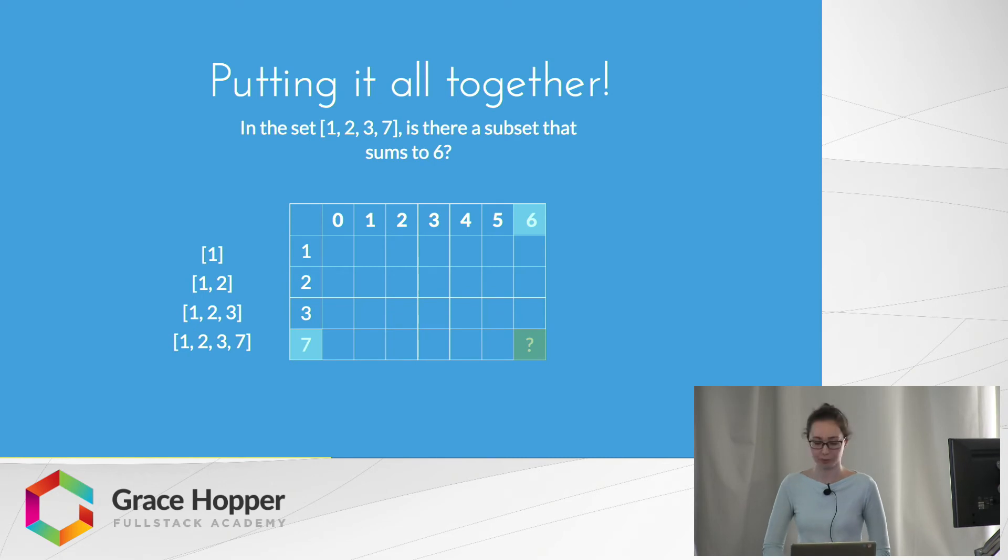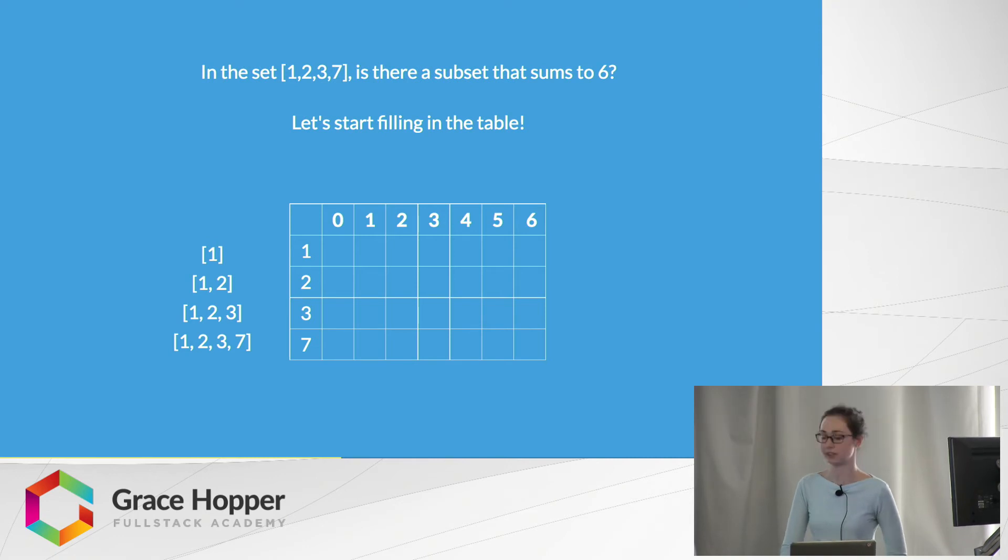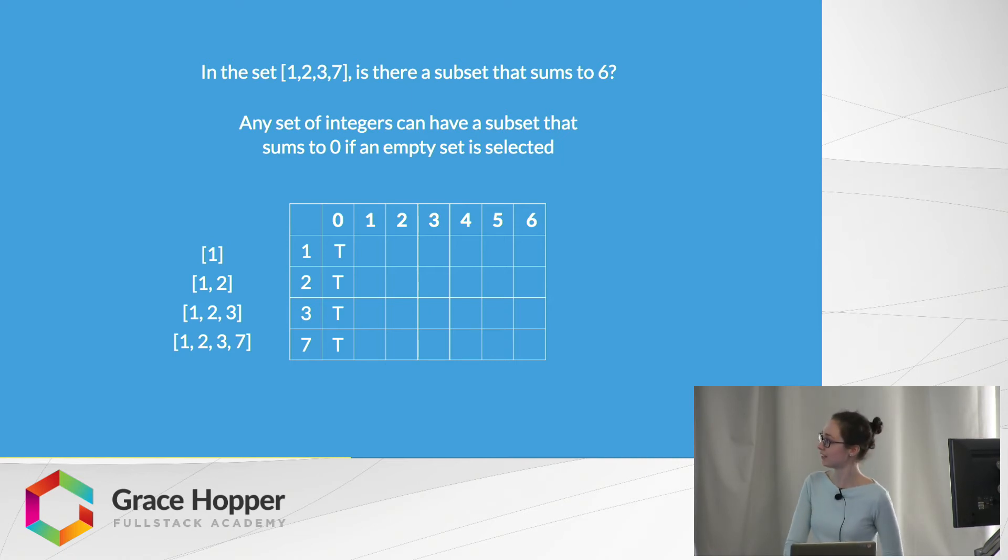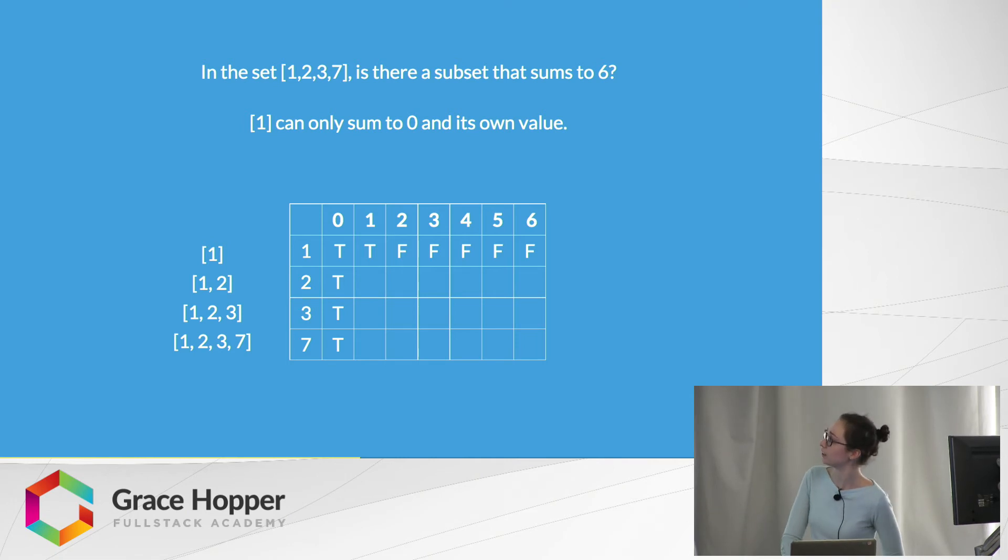This is how we would put this all together. If our question, which I showed earlier, is: in the set {1, 2, 3, 7}, is there a subset that sums to 6? We have it set up just like this, and we will start filling out the table. We know that any set of integers can have a subset that sums to 0 if an empty set is selected, so everything in the first column is true. We know that 1 can only sum to 0 or its own value, so we have the 0 and 1 columns in the first row equal to true, and everything else equal to false.